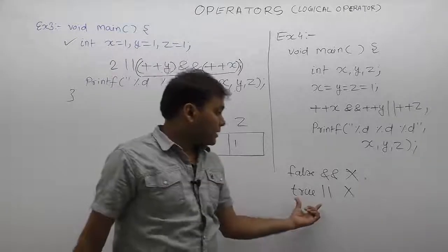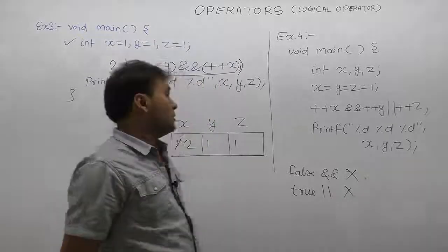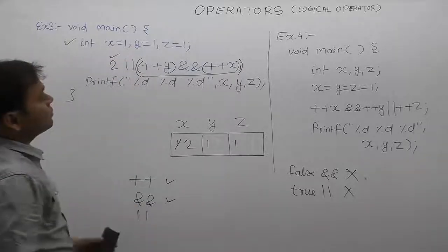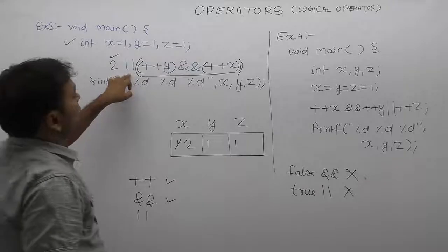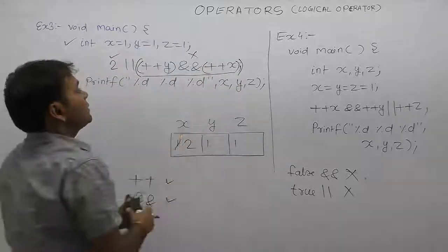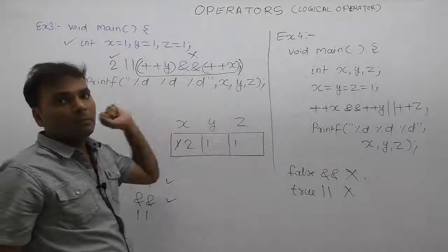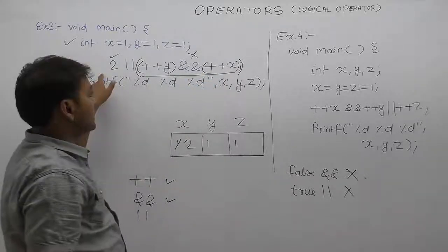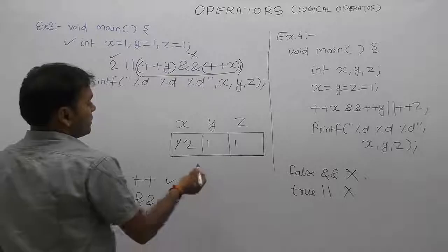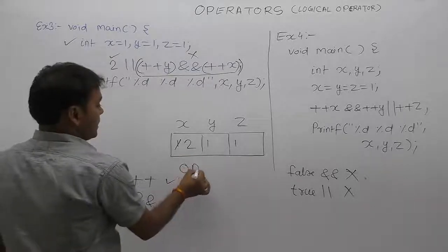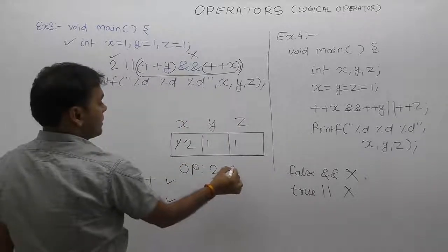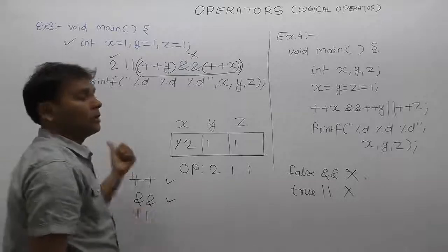Generally, OR का behavior: अगर first condition true है, then second condition test होने की need ही नहीं होगी. इस case में 2 आया — non-zero means condition is true. Condition true है, तो logical OR का second operation part इस case में test नहीं होगा. So y और z में कोई भी increment perform नहीं होगा — only x में first time increment perform हुआ. Therefore the output of this program, based on the printf functions: value of x is 2, y is 1, z is also 1.